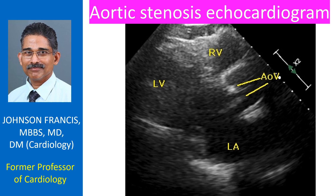Usually in this view, the anterior cusp is the right coronary cusp and the posterior one is the non-coronary cusp. The left coronary cusp is not seen in this plane. The thickening and post-systolic separation of aortic leaflets are evident.